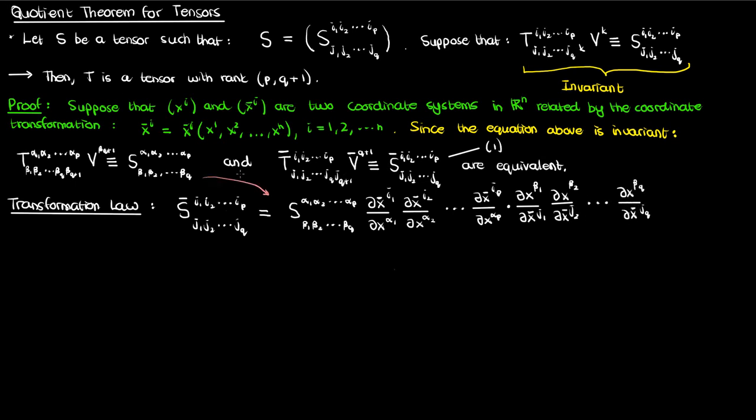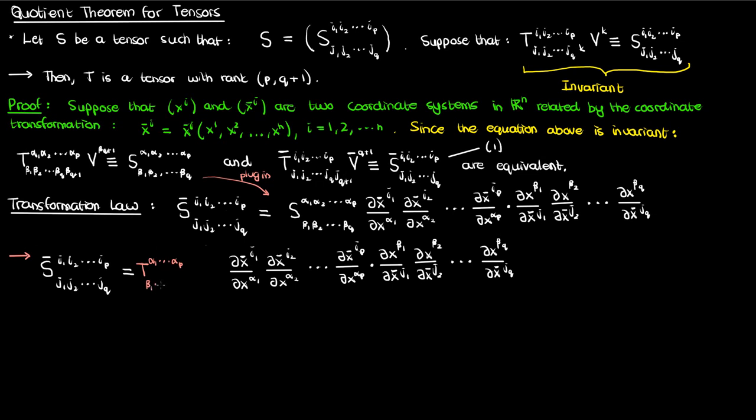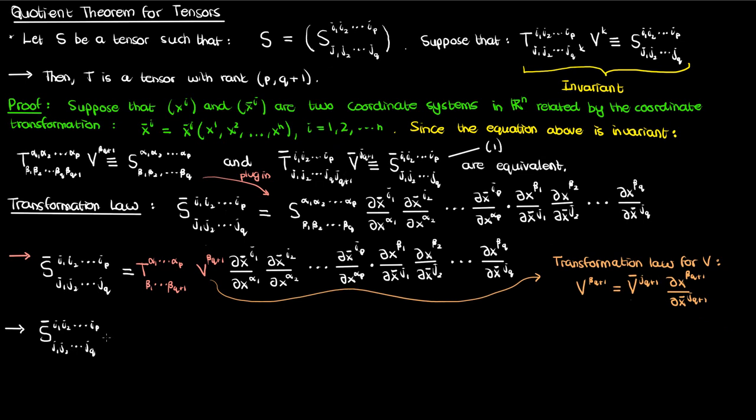If we now use the unbarred equation to write out the expression for the unbarred components of S, as in substitute the T times V for the unbarred version of S on the right hand side, we will end up with the following. Let's now write the vector components back in terms of barred coordinates by converting them from the unbarred coordinate system back to the barred system. I will write the unbarred components of V in terms of the barred components of V with this transformation equation. And once I substitute that, I'll get an equation which I'll call equation 2.